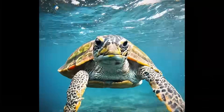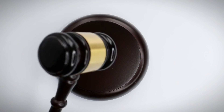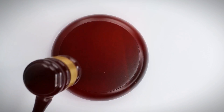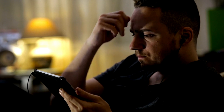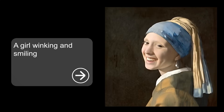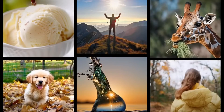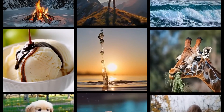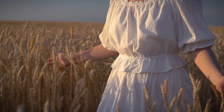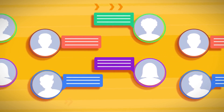We will discuss some of the ethical, social, and legal implications of Lumiere, such as the potential for misinformation, manipulation, and deception. We will also address some of the technical and creative limitations of this technology, such as the quality, diversity, and originality of the videos. We will also raise some of the philosophical and existential questions it poses, such as the nature of reality, truth, and art, and invite the audience to share their opinions and perspectives on these issues.